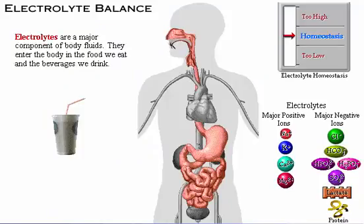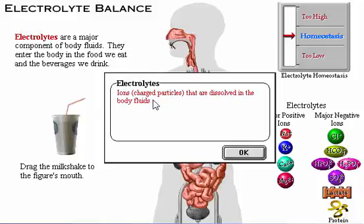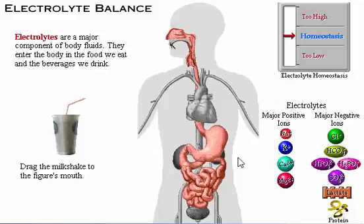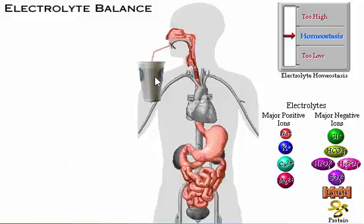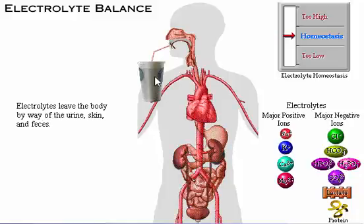Electrolytes are a major component of body fluids. They enter the body in the food we eat and the beverages we drink. While electrolytes leave the body mainly through the kidneys by way of the urine, they also leave through the skin and feces.